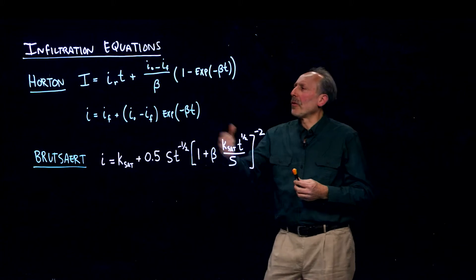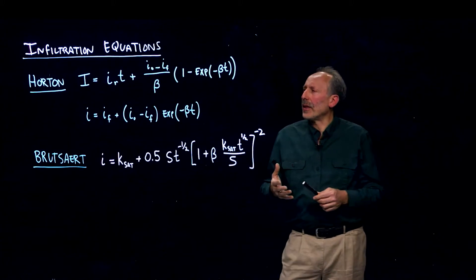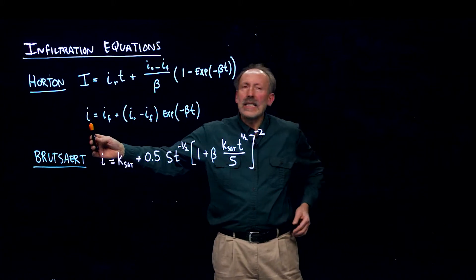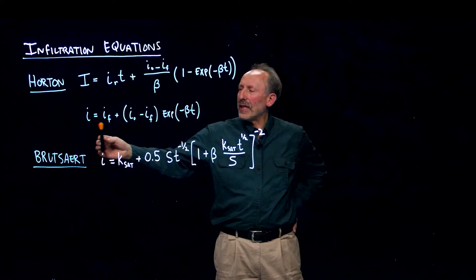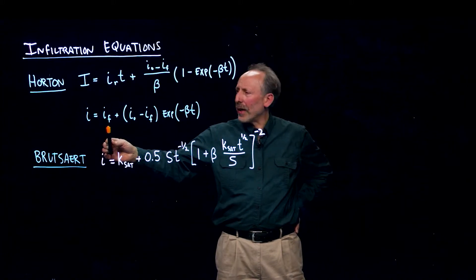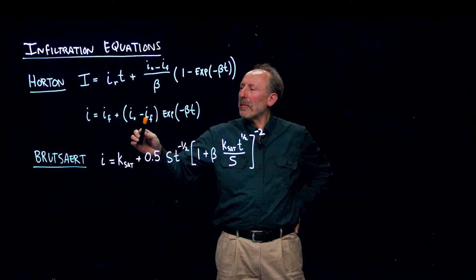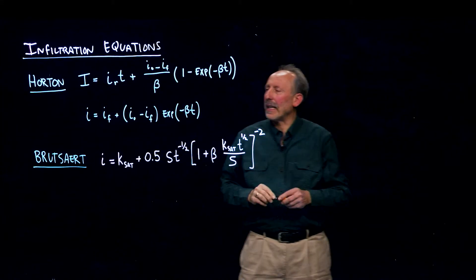And so the classical result from Horton in the 1930s, he says the instantaneous rate of infiltration is equal to the final rate of infiltration plus the initial rate minus the final rate times the exponential beta t.